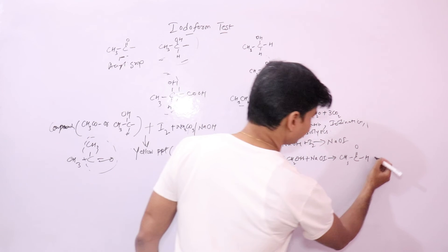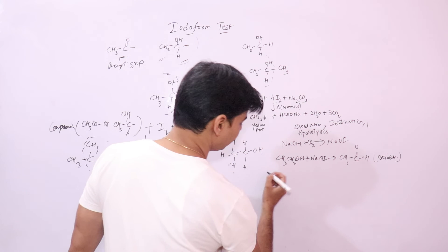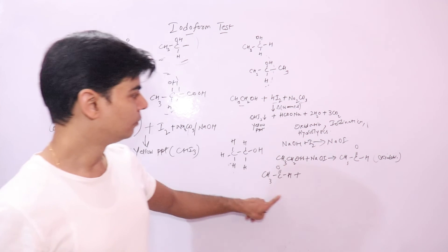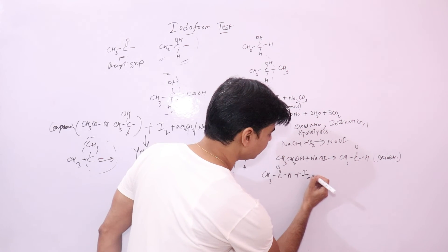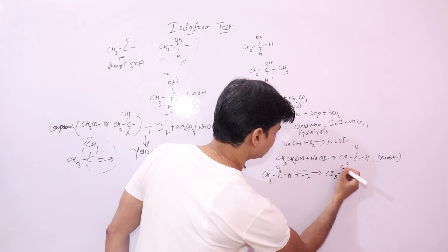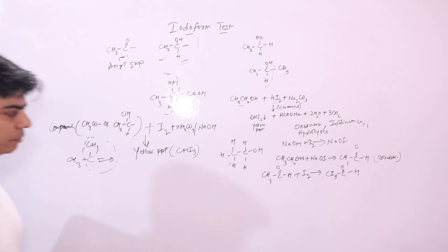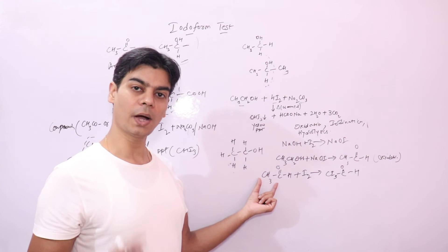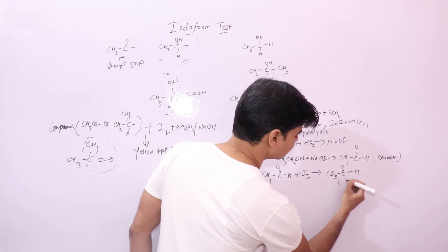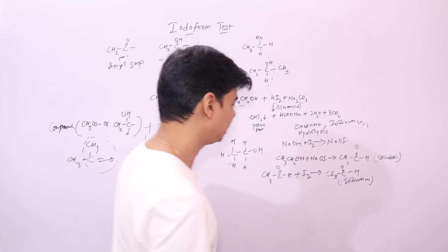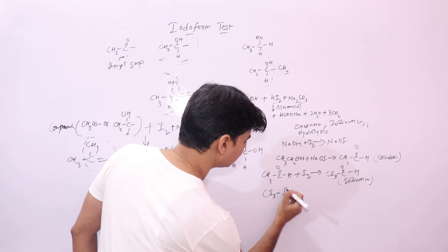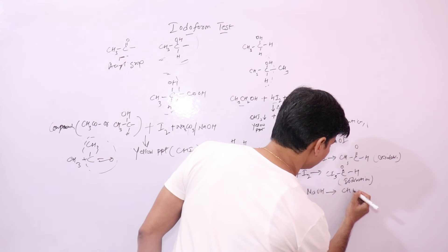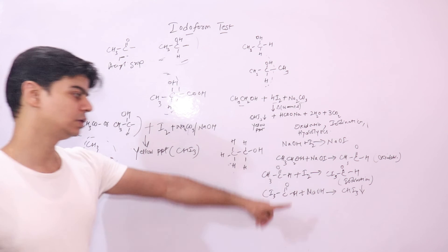The second step is iodination, where the acetaldehyde formed upon oxidation reacts with iodine. All three hydrogen atoms of the methyl group undergo iodination to form the triiodo compound. The third step is hydrolysis: this triiodo compound undergoes hydrolysis with sodium hydroxide to give CHI3, which is the yellow precipitate — Iodoform.